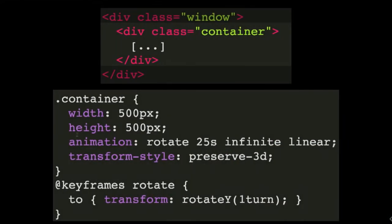Inside that window, we create another div to contain all the particles. This container will also control the main rotation. It is important to add the property transform style to let the browser know that the children are in 3D space.